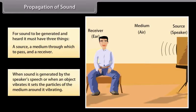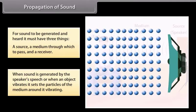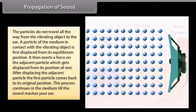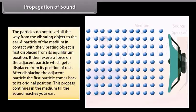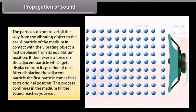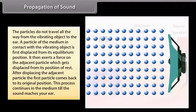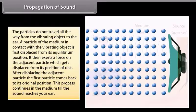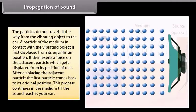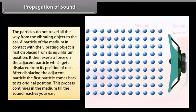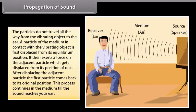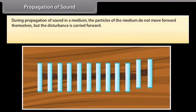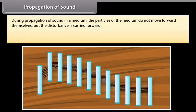When a sound is generated by the speaker's speech or when an object vibrates, it sets the particles of the medium around it vibrating. The particles do not travel all the way from the vibrating object to the ear. A particle of the medium in contact with the vibrating object is first displaced from its equilibrium position. It then exerts a force on the adjacent particle which gets displaced from its position of rest. After displacing the adjacent particle, the first particle comes back to its original position. This process continues in the medium till the sound reaches your ear.